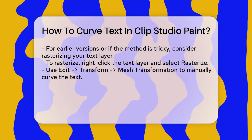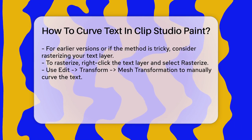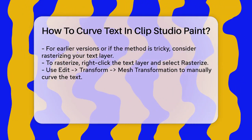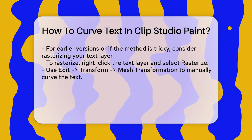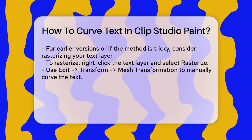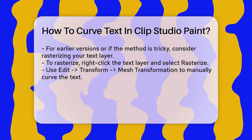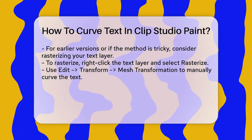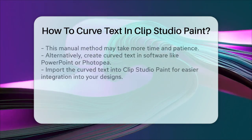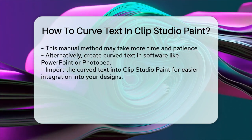If you're using an earlier version of Clip Studio Paint or find this method a bit tricky, there's another way to achieve curved text, although it's not as straightforward. You can rasterize your text layer by right-clicking on it and selecting Rasterize. Then go to Edit > Transform > Mesh Transformation. This will give you a mesh with several points that you can adjust to curve your text manually. However, this method requires more time and patience.